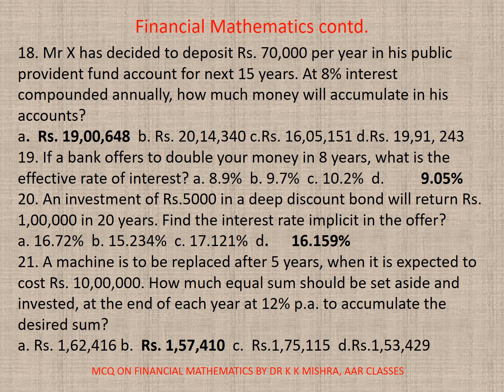Question 21: A machine is to be replaced after 5 years when it is expected to cost rupees 10 lakh. How much equal sum should be set aside and invested at the end of each year at 12% per annum to accumulate the desired sum? The correct option is B — rupees 1,57,410.